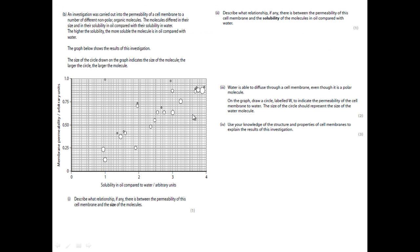So the next question is, an investigation was carried out into the permeability of a cell membrane to a number of different non-polar organic molecules. The molecules differed in their size and their solubility in oil compared with their solubility in water. The higher the solubility, the more soluble the molecule is in oil compared with water. The graph below shows results in the investigation. The size of the circle drawn on the graph indicates the size of the molecule. The larger the circle, the larger the molecule. So the first question is, describe what relationship, if any, there is between the permeability of the cell membrane and the size of the molecules.